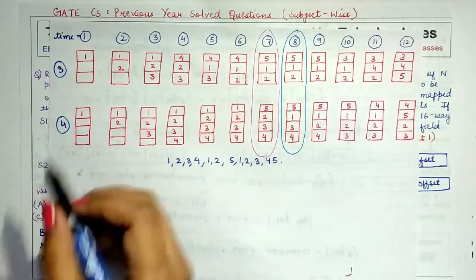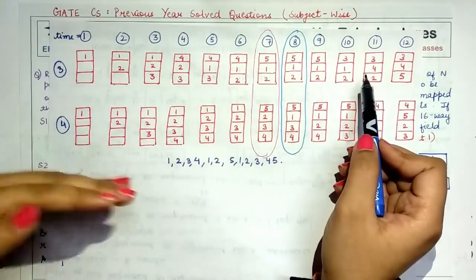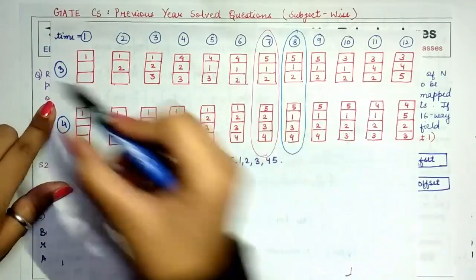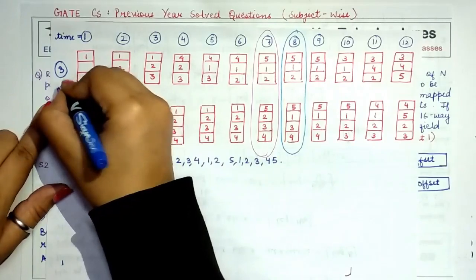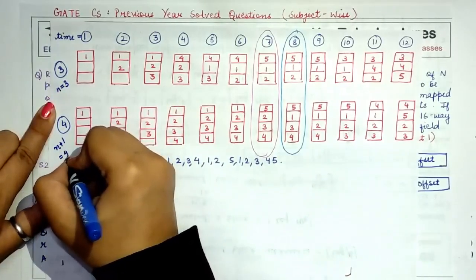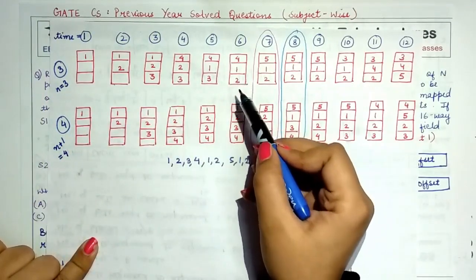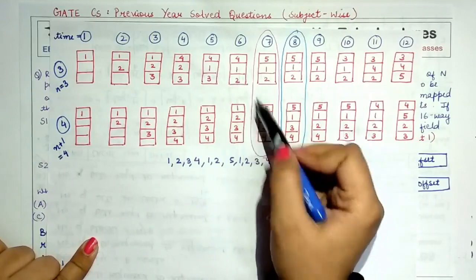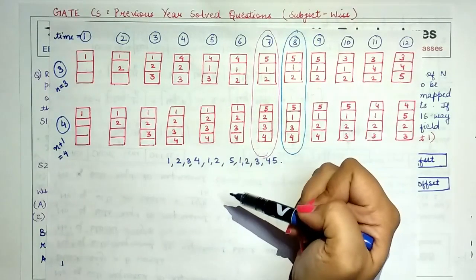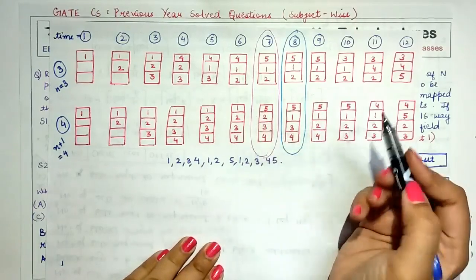An algorithm which is not a stack algorithm means that at some point in time, when we compare the pages present for n frames with the pages present for n+1 frames, the pages in n frames are not a subset of the pages in n+1 frames. In that case, Belady's Anomaly may occur. FIFO is known to suffer from Belady's Anomaly.